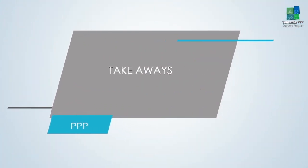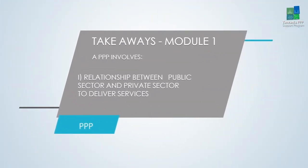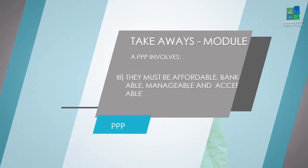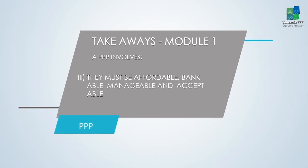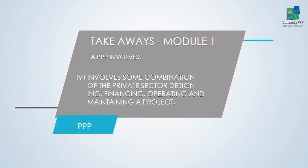Congratulations on completing the first assignment for module one of this course. We hope that by undertaking this exercise and applying what you've learned, you better understand the principles of PPP frameworks. Here are some takeaways from this first module: a public-private partnership involves a range of relationships between the public and private sector in the delivery of public infrastructure and services. PPPs must generate value for money and must be affordable, bankable, manageable, and acceptable. A PPP involves some combination of the private sector designing, building, financing, operating, and maintaining the project — all those elements or some combination thereof.